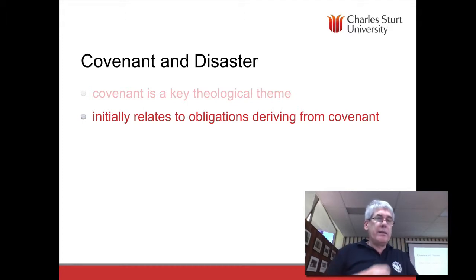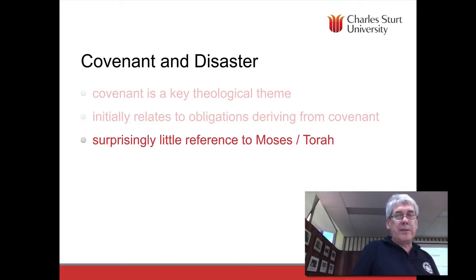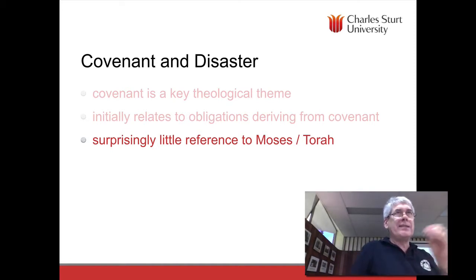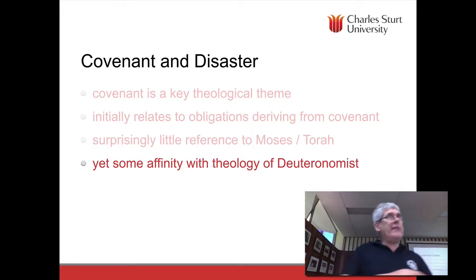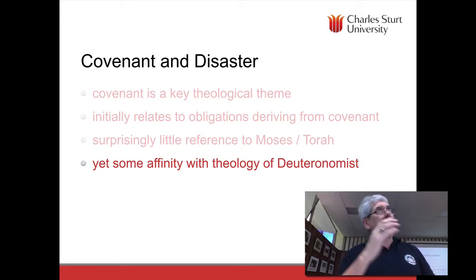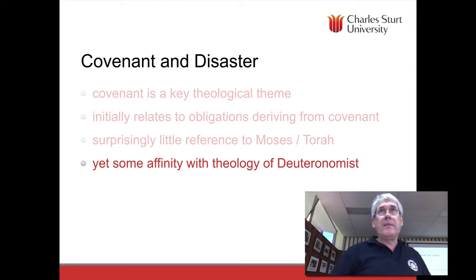What this develops for the prophets is the idea: we're in this deal with Yahweh, and under the terms of our covenant with Yahweh we have certain obligations. That's why it's particularly remarkable that there's so little reference to Moses and to Torah, because this is exactly the point in the argument when they should have produced the documents or at least alluded to the traditions about Moses and Torah. There does seem to be an affinity in the prophetic ministry with the basic theological tendencies of the Deuteronomist: if you obey the covenant, you will be blessed; if you disobey the covenant, you will be punished.